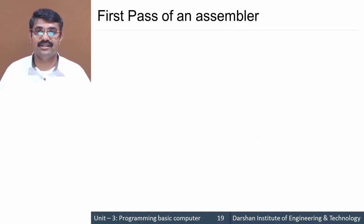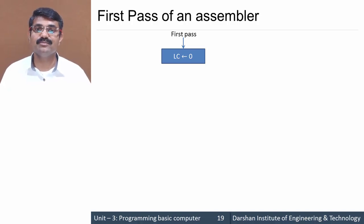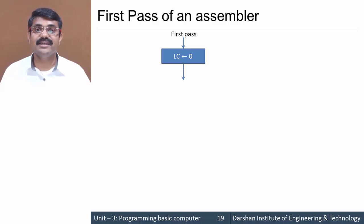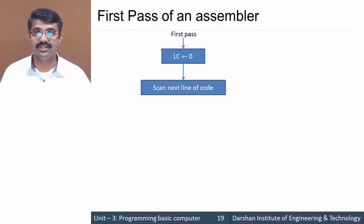Let's see this by means of a flowchart. When the first pass starts, the location counter (LC) is set to zero. The location counter can also be termed as the memory address where the program is stored. After setting it to zero, we scan the next line of code — that is, the first instruction or first line written in the program.